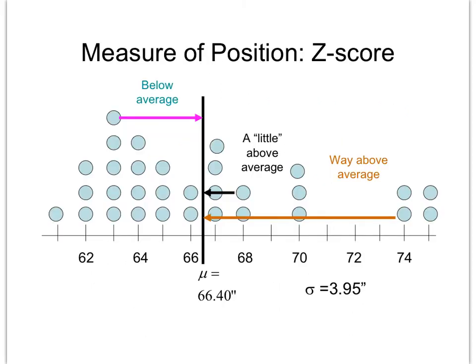The z-score is just a measure of position. Here, our population average mu is 66.40. If you have a z-score that is a little above, the mu would have a z-score of 0. If it's a little above, it'll probably have a z-score around 1. If it's way above, it could have a z-score of 3 or greater.